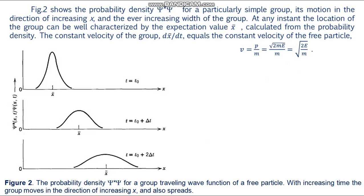Figure 2 shows the probability density ψ*ψ for a particularly simple group or wave packet moving in the direction of increasing x, and the ever-increasing width of the group. At any instant, the location of the group can be characterized by the expectation value of x calculated from the probability density. The constant velocity of the group, d/dt⟨x⟩, equals the classical free particle velocity v = √(2E/m).